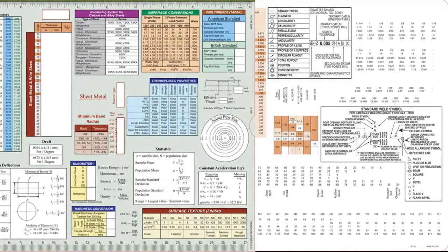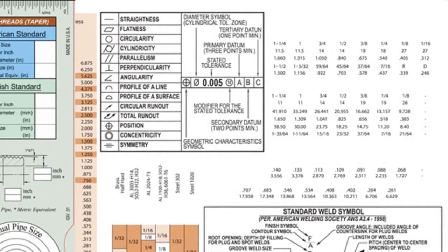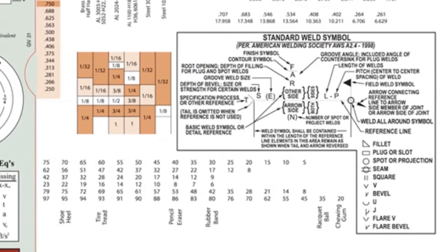Pull the sliding card out to the right, and you'll find two more tables for call-outs for geometric dimensioning and tolerancing, and below that, call-outs for standard weld symbols.